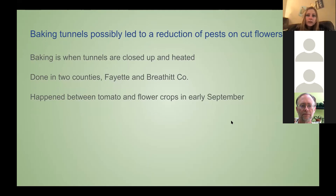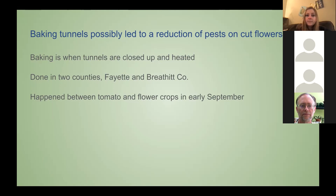Now I'm going to talk about baking tunnels and what that means. Tunnel baking happens after the tomatoes are taken out and before the flowers are put in. The tunnel is emptied of all plants, closed up, and then allowed to just bake. The sun heats the tunnels and they get really hot — it's kind of a sterilization method that keeps diseases out and can kill pests. It was done in Fayette County and Breathitt County, but not Boyle County. That's why it's interesting in the data how pests stop becoming a problem with the flowers in the two counties where tunnels were baked, but not in the one county where it was not baked.